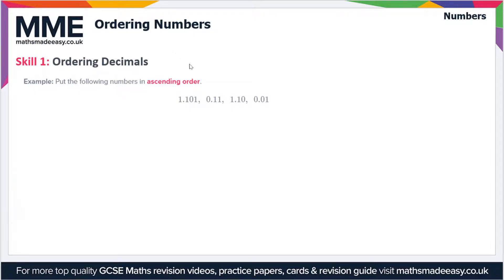Now ascending order is smallest to largest, so we're looking for the smallest number first. And the way we're going to do this is just go through each of the numbers and look at the first digit, and then compare this with the other numbers, and then the second digit and so on, to work out which has the smallest value.